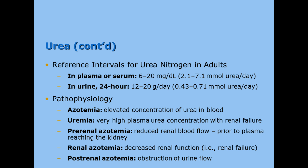The reference range in serum is 6 to 20 milligrams per deciliter, which we use more often than millimoles. In urine, the reference range is 12 to 20.